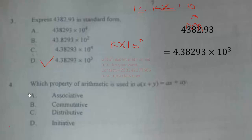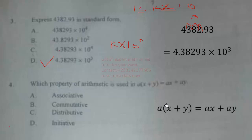Question 4: Which property of arithmetic is used in a(x + y) = ax + ay? We can see that we distributed the factor outside the bracket to the terms inside, therefore this is called the distributive property. The correct answer is option C.